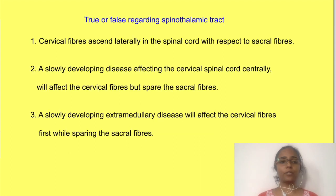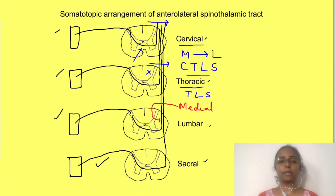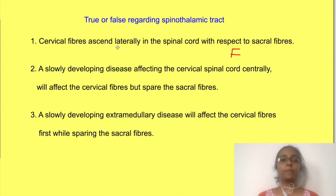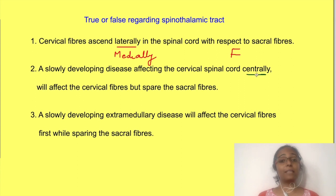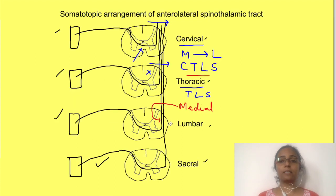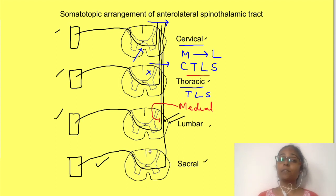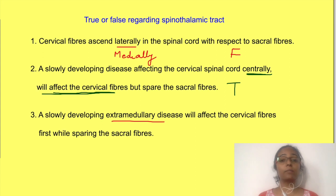Now let us look at the second question. The first statement is false. The arrangement of fibers of the anterolateral spinothalamic tract from medial to lateral is cervical, thoracic, lumbar, and sacral — so cervical fibers ascend medially, not laterally. Therefore, a disease developing centrally will affect cervical fibers first — so the second statement is true. An extramedullary disease developing outside the substance of the spinal cord will affect sacral fibers first — so the third statement is false.